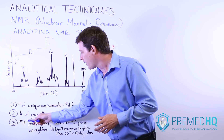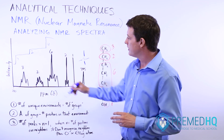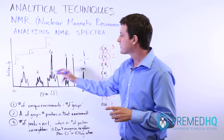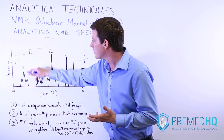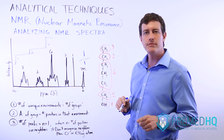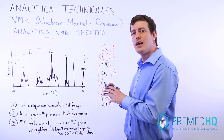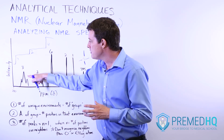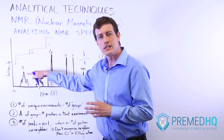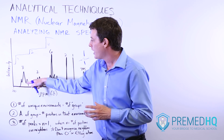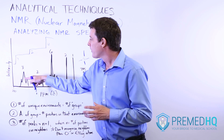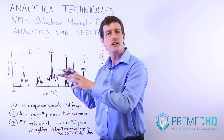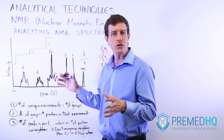The third and final thing to be aware of is that many of these groups are separated into different sub-peaks. The number of sub-peaks within a group is equal to N plus one, where N is the number of neighboring protons connected to that environment. For example, a group with three peaks means N plus one equals three, so N equals two — those protons have two hydrogens on their neighboring carbons.